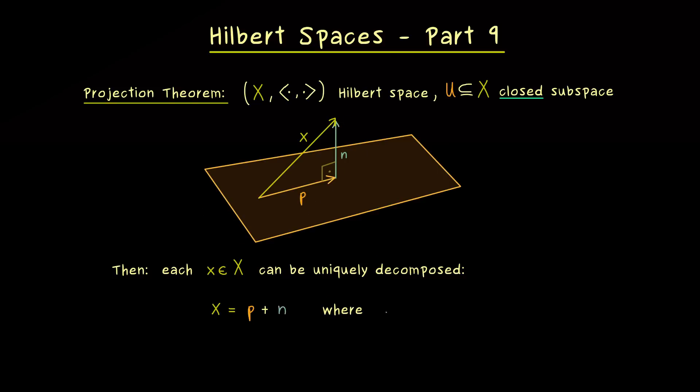Of course the names are not so important, but the subspaces where they come from. So it's important to remember that p and n are orthogonal to each other. And in addition they also get special names. As already mentioned, p is called the orthogonal projection of x onto the subspace U.